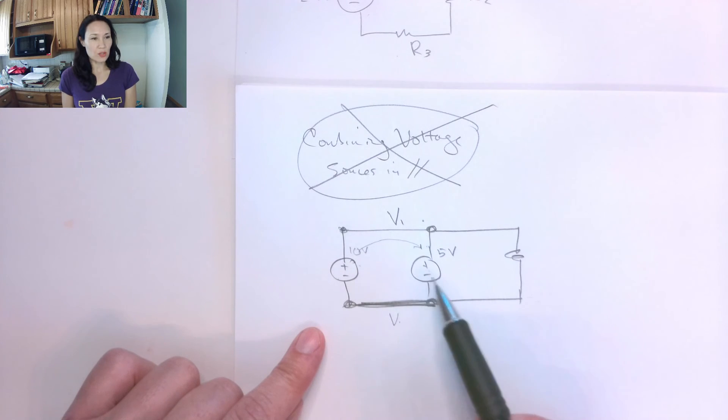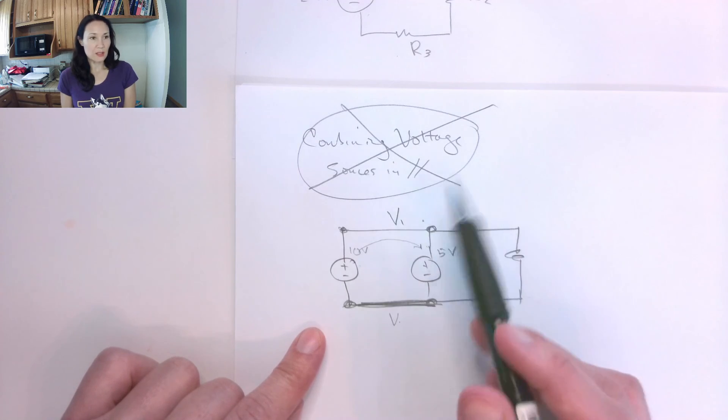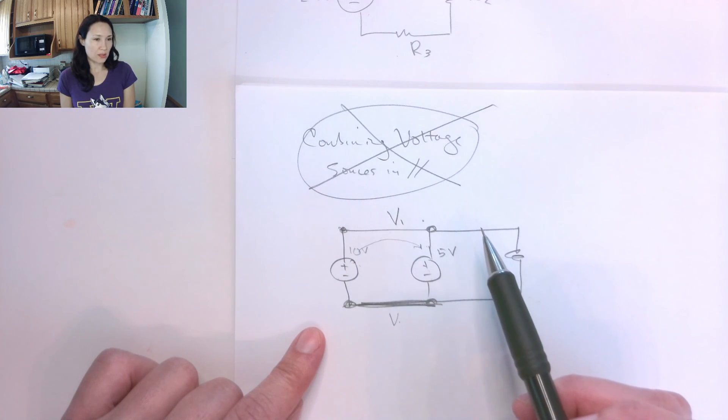So if you deliver current to, say, a battery or some kind of voltage source like this, this could be problematic, damaging to the component, and possibly dangerous. So that's why we don't combine voltage sources in parallel.